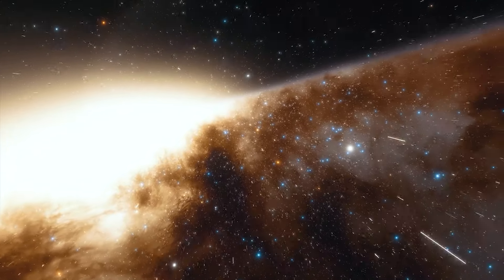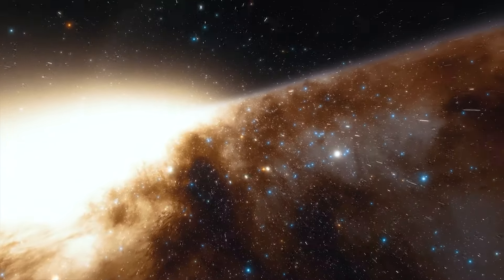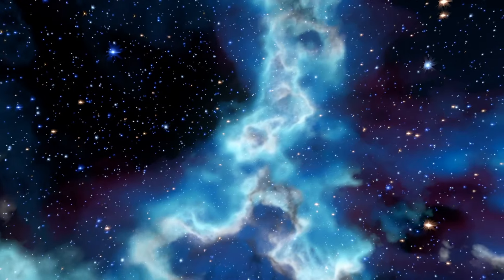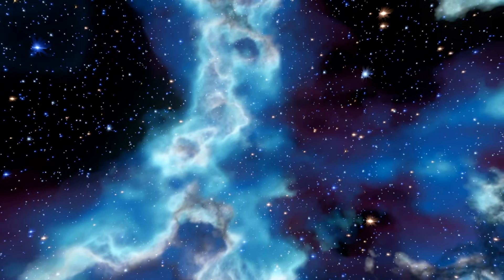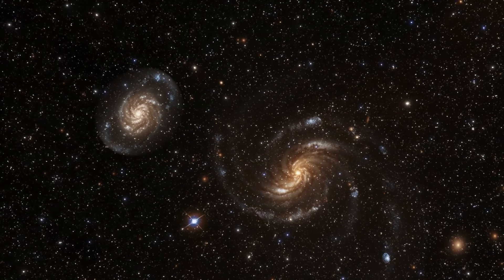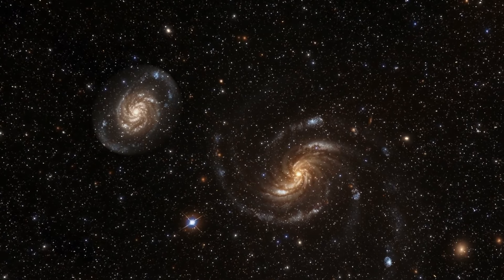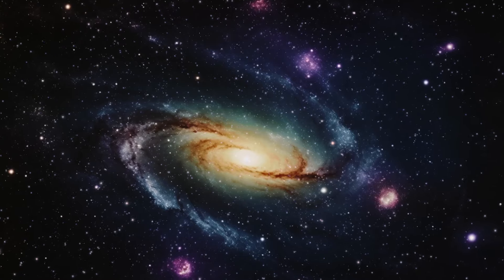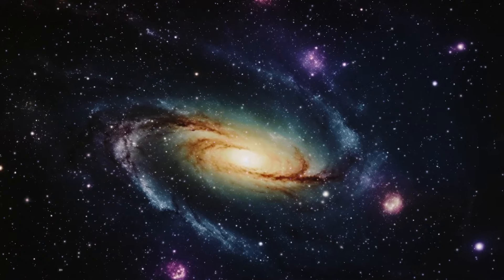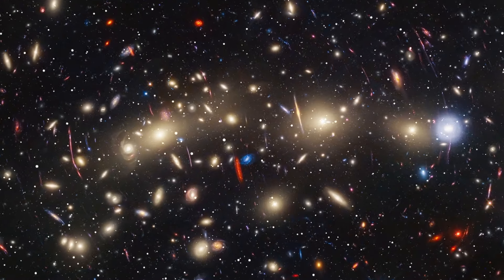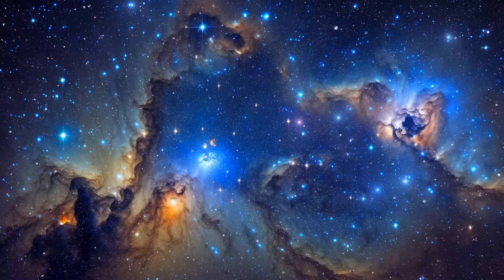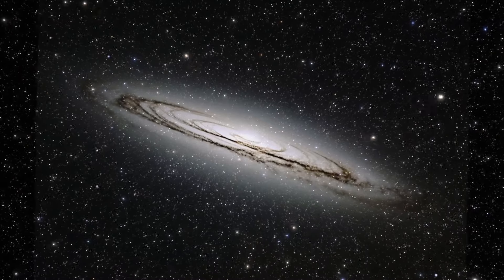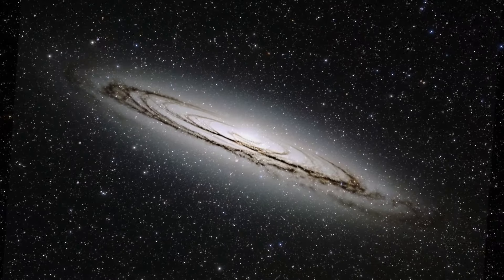The Milky Way, for example, has over 50 known satellite galaxies, including the large and small Magellanic clouds. Satellite galaxies can have significant effects on their host galaxies and vice versa. Interactions between satellite galaxies and their hosts can lead to the disruption and transformation of both systems, as well as to the triggering of bursts of star formation, and the exchange of material between galaxies.